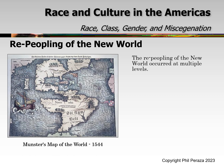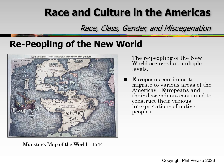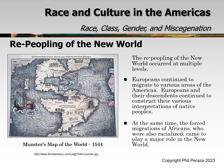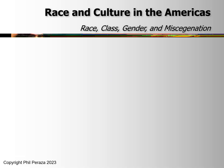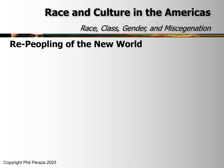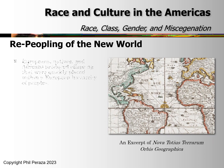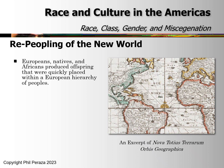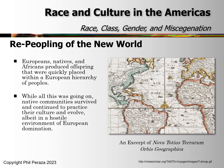The repeopling of the New World occurred at multiple levels. Europeans continued to migrate to various areas of the Americas and continued to construct their various interpretations of Native peoples. At the same time, the forced migrations of Africans who were also racialized came to play a major role in the New World. Europeans, Natives, and Africans produced offspring that were quickly placed within the European hierarchy of peoples, while Native communities survived and continued to practice their culture, all in a hostile environment of European domination.